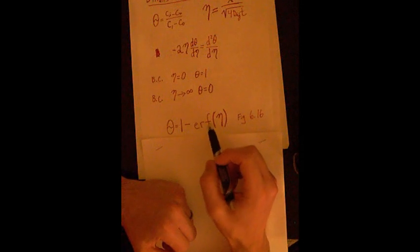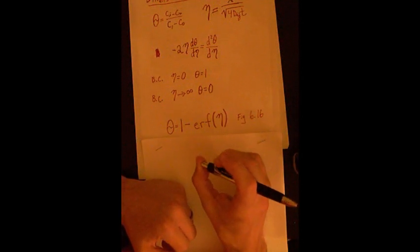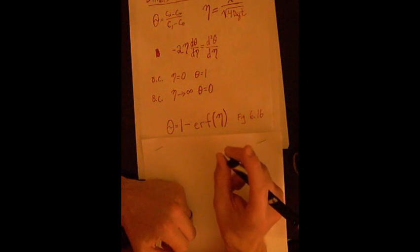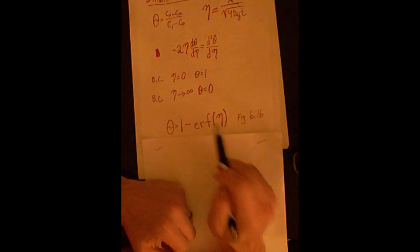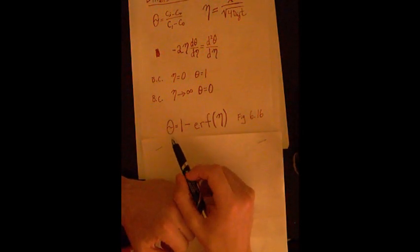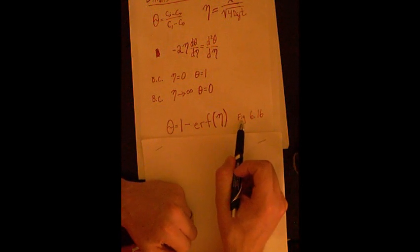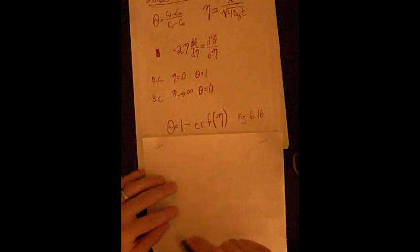So there's tabulated values for the error function. You can use MATLAB and Mathematica as well to figure this out, and they have built-in functions. There's also graphical representation of this exact equation of theta equals 1 minus the error function of eta in your book in figure 6.16.